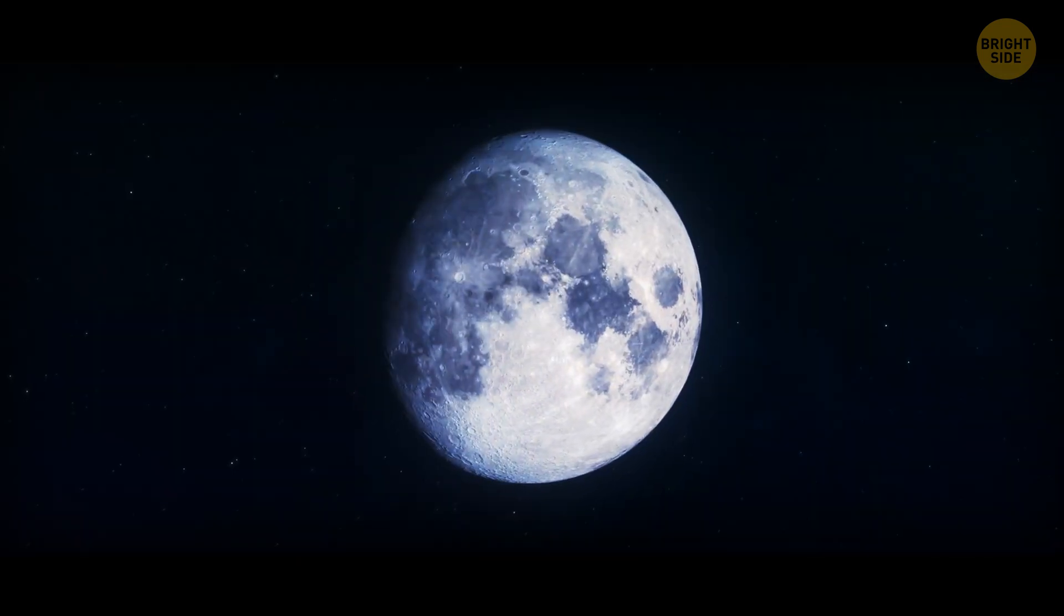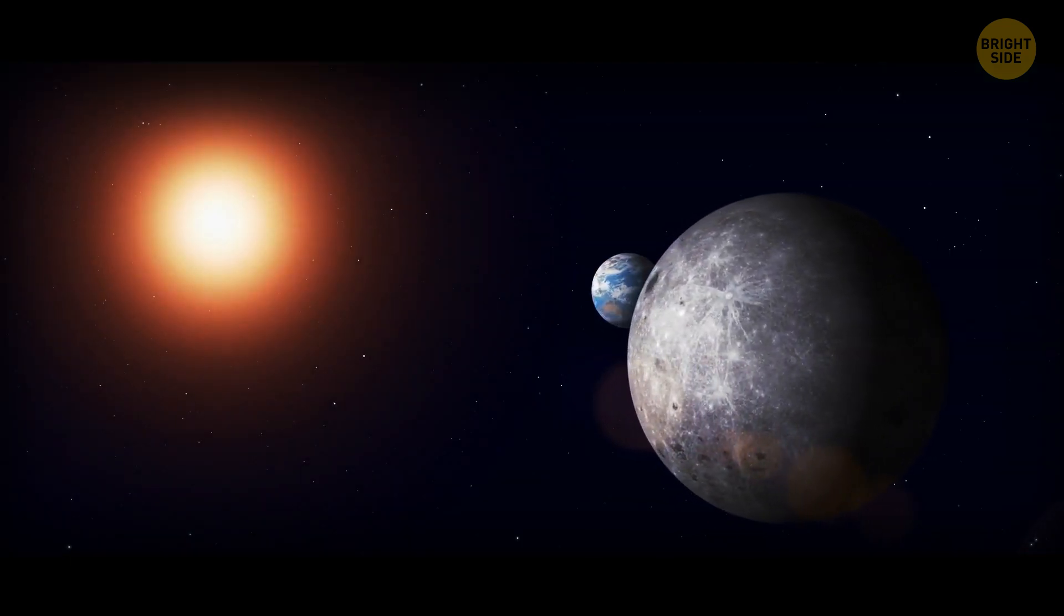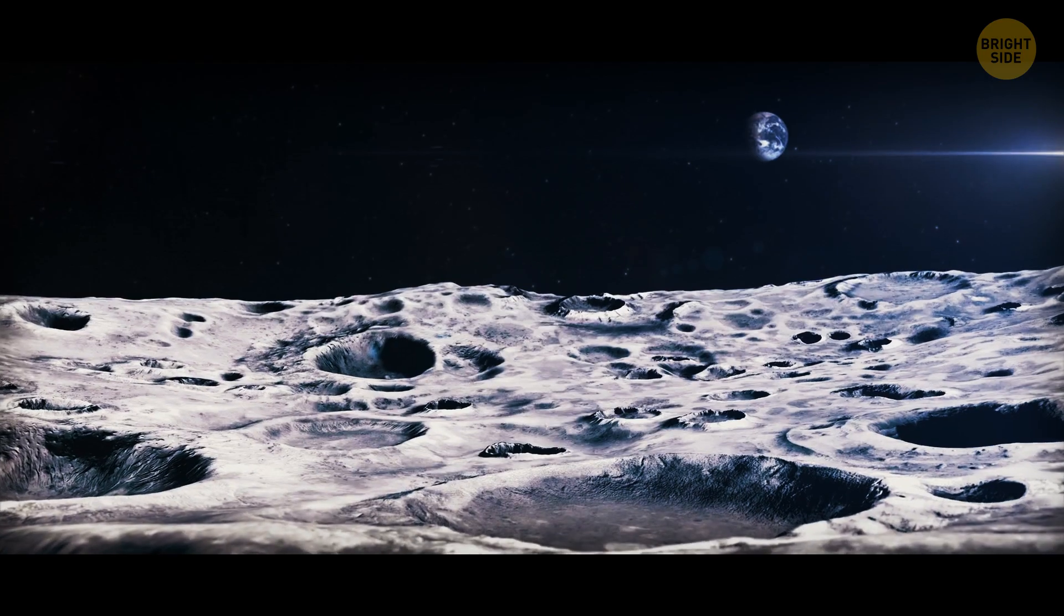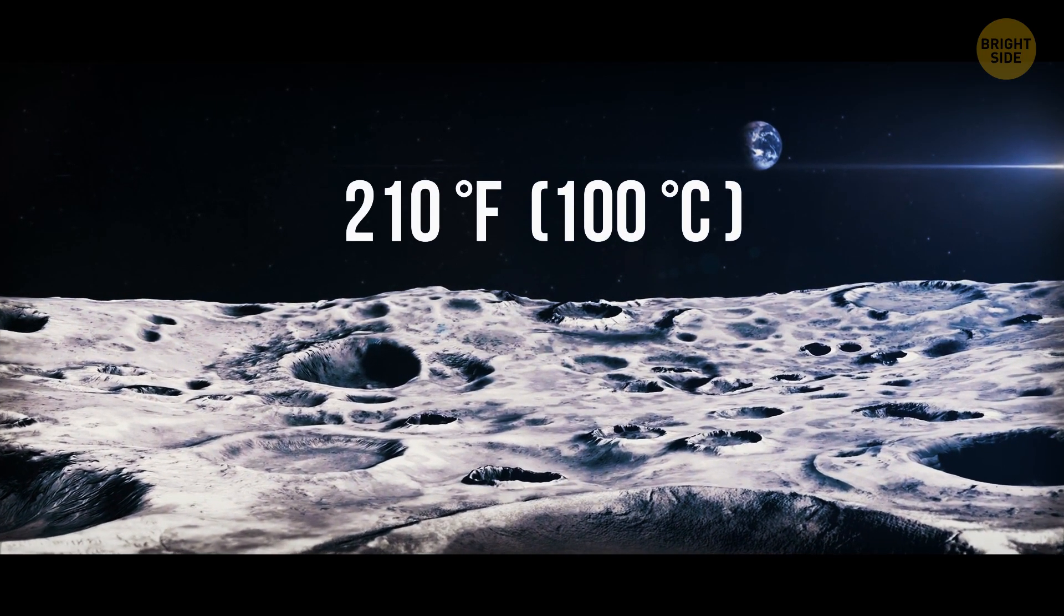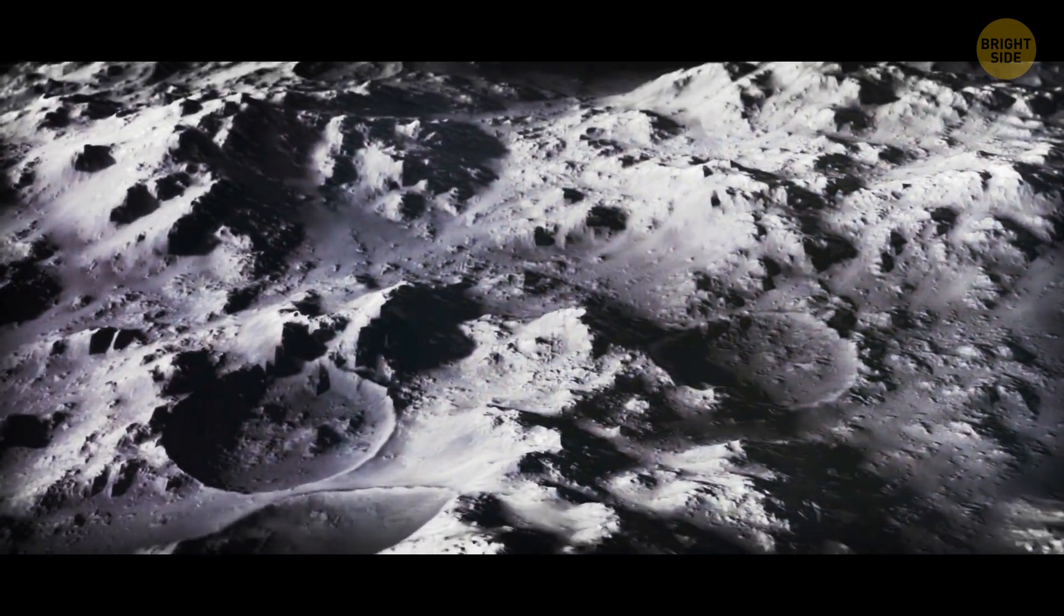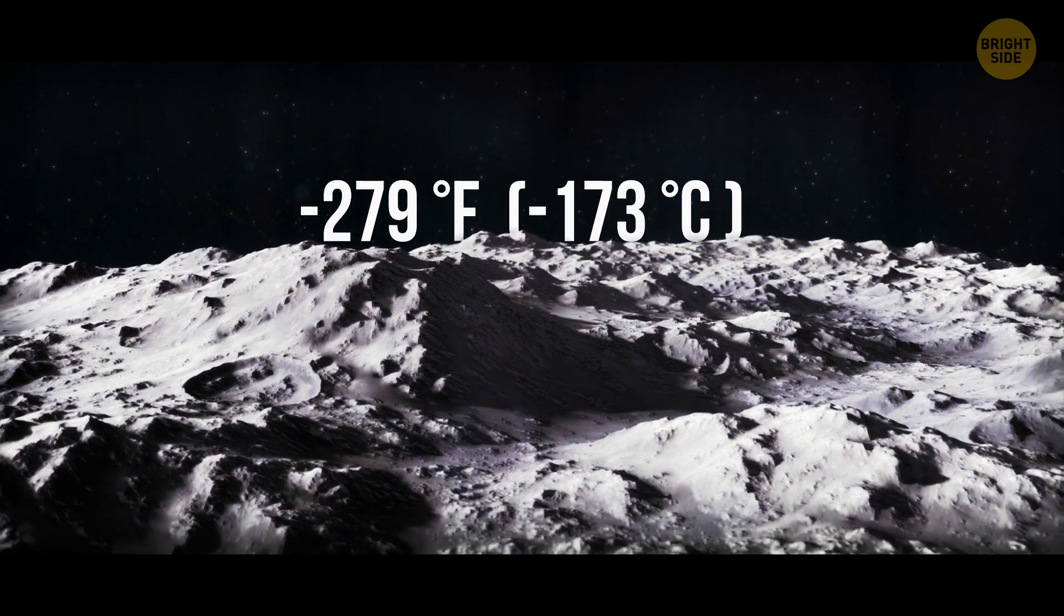The moon is not hot because it doesn't have an atmosphere, so it can't absorb sunlight as our planet does. Its surface gets very hot in the daytime, about 210 degrees Fahrenheit, but since there's no atmosphere, the temperature drops extremely during the night to negative 279 degrees Fahrenheit.